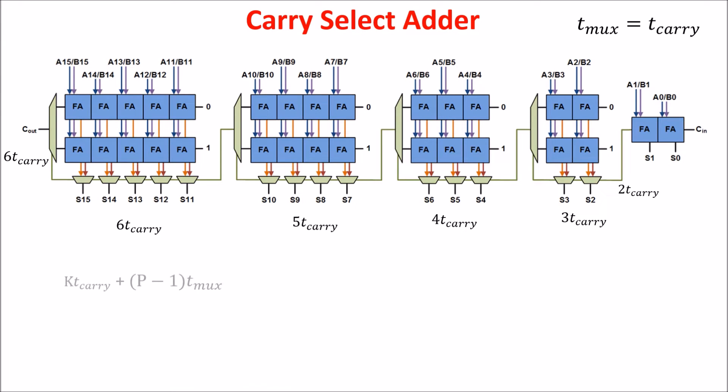In general, the delay is KT-carry plus (P minus 1)T-mux, where K is the number of bits of the first block and P is the number of blocks. This is not so different from the delay we found when we divide equally the bits in the blocks, but this circuit has its advantage when we have many bits.